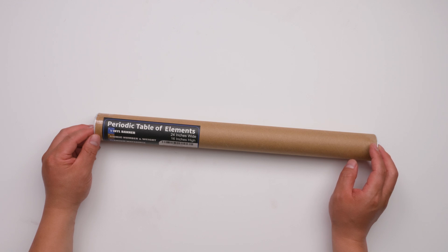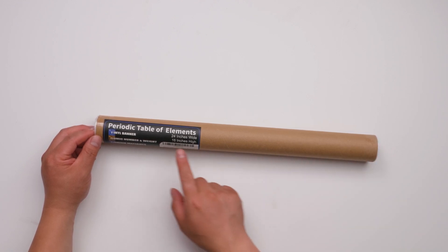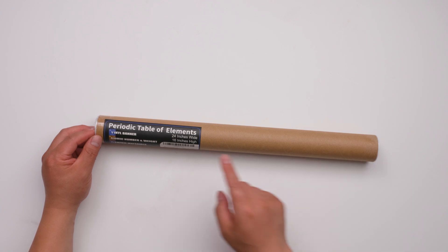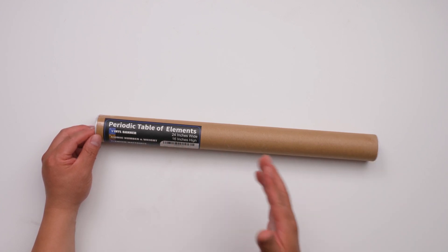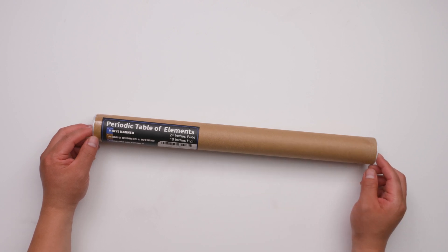This is a periodic table of elements poster. It's 24 inches wide and 16 inches high. In this video, I'm going to do an unboxing and check the quality. So let's get started.